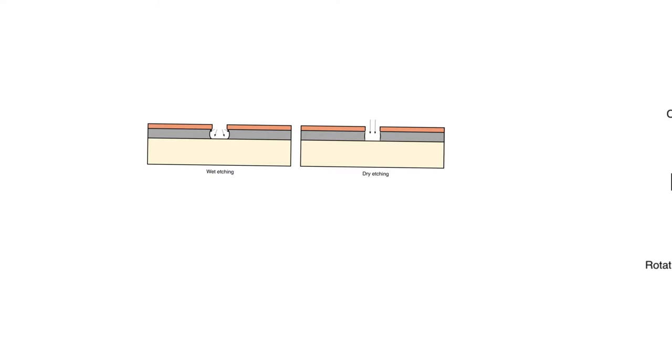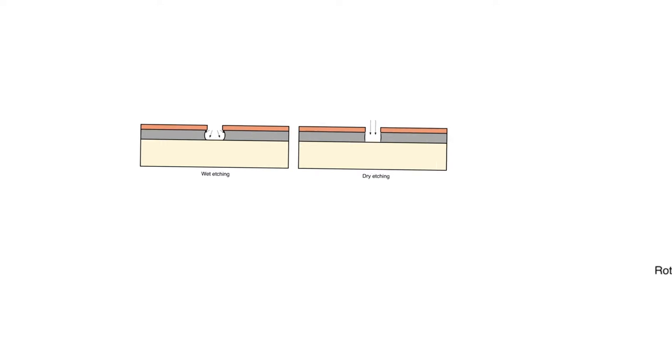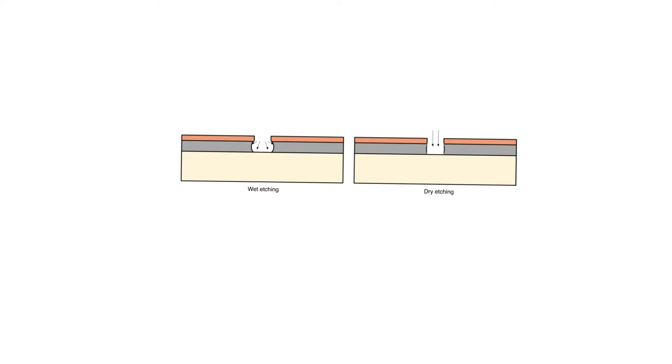Etching is the process of eating away at a certain material in the wafers so that we can create a feature. When we talk about etching we are usually talking about etching away silicon dioxide so that we can reach the surface of the wafer. However, etching could also be used to pattern other materials, particularly metals and silicon.